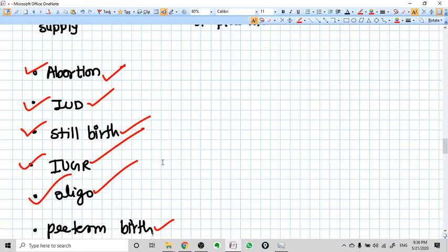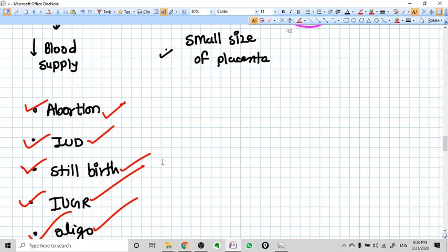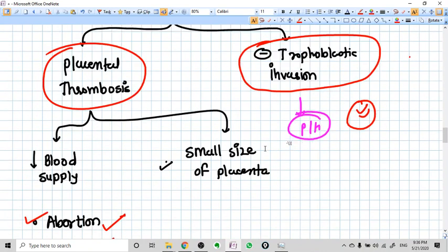Remember, the fetus is morphologically normal. Otherwise, the most common cause of abortion is what? Chromosomal anomaly of the fetus or genetical abnormality of the fetus is the most common cause of abortion. But in this case, there is no chromosomal or any morphological abnormality. The cause of abortion is what? Decreased placental function, decreased blood supply due to thrombosis of placental vessels.